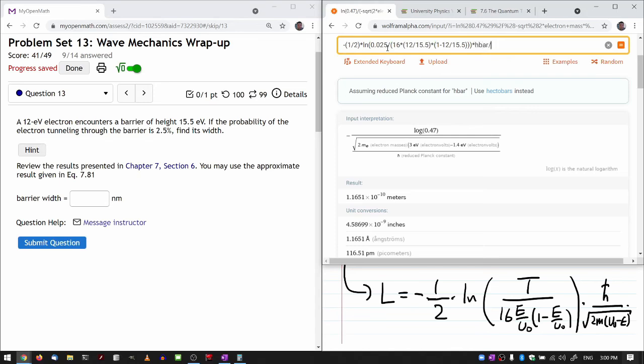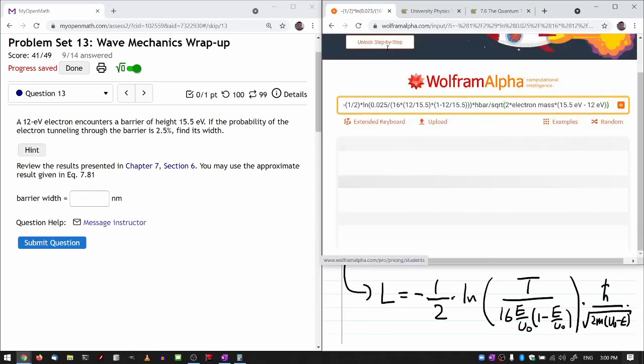That's the whole thing under the natural log times H bar divided by square root of 2 times electron mass times, and here I do need to plug in the unit, 15.5 eV minus 12 eV. That's everything. Let's see what we get.